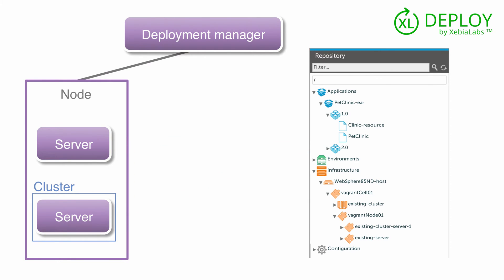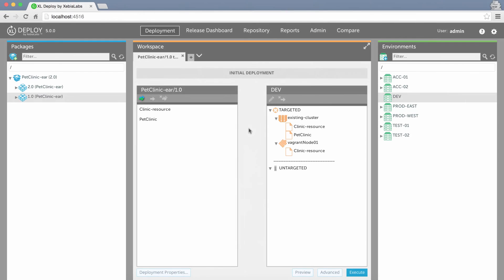Whether Excel Deploy deploys to a node, server, or cluster depends on which of these are assigned to the particular environment that you're deploying to. Excel Deploy also includes advanced features like tagging to help you customize what is deployed where. For example, this deployment is set up so that Excel Deploy maps the resource specification to a node and a cluster, and maps the EAR file to a cluster. These mapped deployables are called deploys.